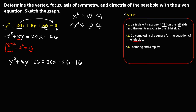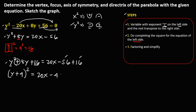Then factor and simplify. To factor the y expression: y squared factors as y times y, and since it's positive, plus 4 times 4 gives (y + 4) squared. On the right side, simplify: 20x and negative 56 plus 16 gives negative 40. So we have (y + 4)² = 20x − 40.